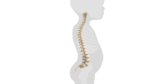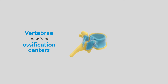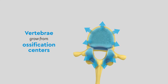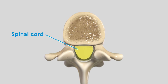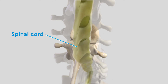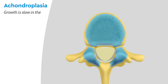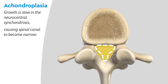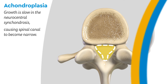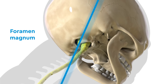In the spine, instead of using growth plates, each vertebra grows from special points called ossification centers. They form the strong bony spinal canal that protects our spinal cord. However, in achondroplasia, bone growth is slower between the ossification centers in an area called the neurocentral synchondrosis, causing the spinal canal to become narrow. In the same way, the opening at the base of the skull, called the foramen magnum, can be more narrow as well.